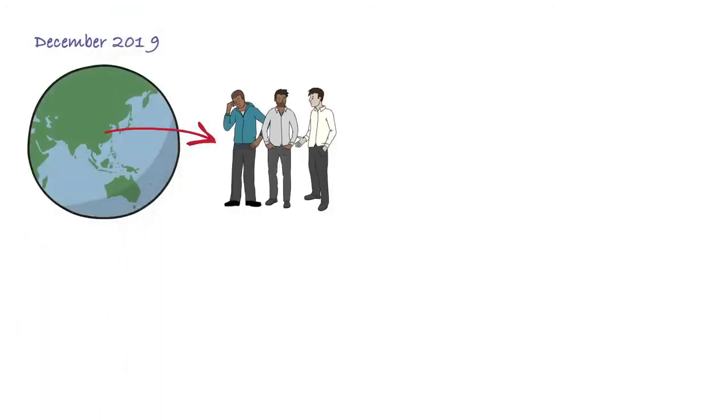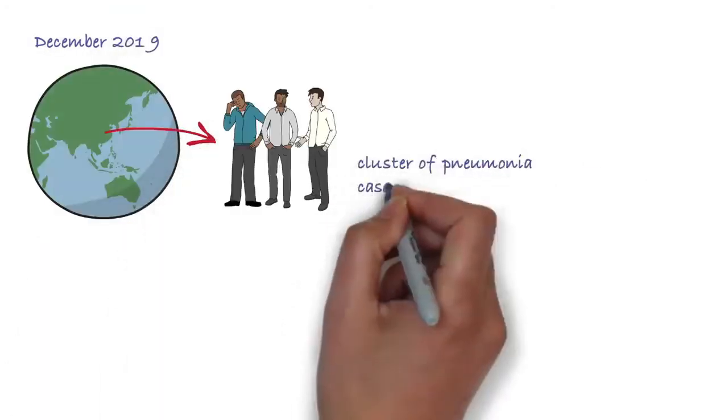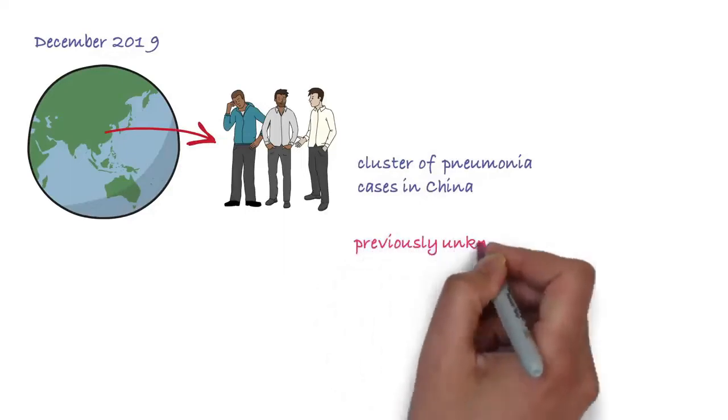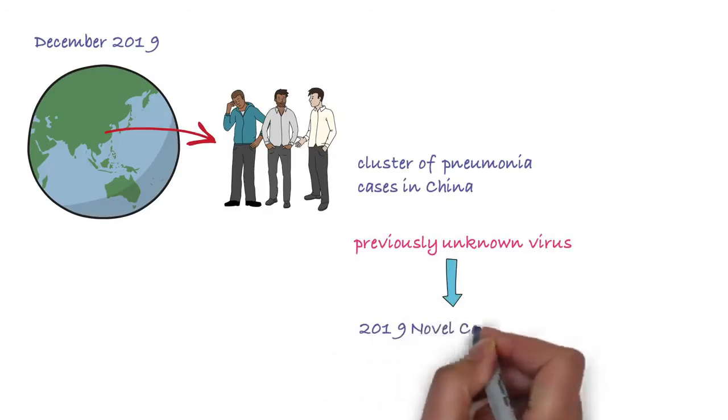In December 2019, there was a cluster of pneumonia cases in China. Investigations found that it was caused by a previously unknown virus, now named the 2019 novel coronavirus.